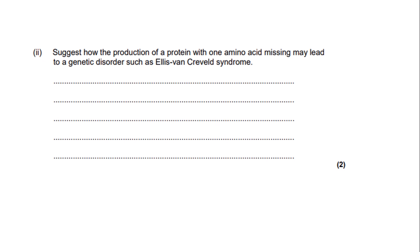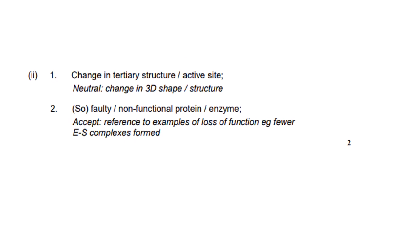The next question asks: suggest how the production of a protein with one amino acid missing may lead to a genetic disorder such as Ellis van Creveld syndrome. This is again asking what the effect of mutations are. I've written: the tertiary structure changes, so the enzyme is non-functional. The mark scheme says: change in tertiary structure or the active site — we wrote change in tertiary structure, so we get that mark. A faulty or non-functional protein or enzyme scores the second mark, and we wrote 'enzyme is non-functional', so we get both marks.